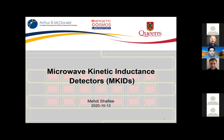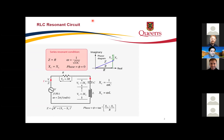MKIDs are popular because they are useful from the millimeter range to the ultraviolet, and indirectly — as Ryan mentioned — you can also use them for dark matter detection and neutrinoless double beta decay. MKIDs are superconducting micro-resonators, and we can model one pixel of an MKID as an RLC circuit.